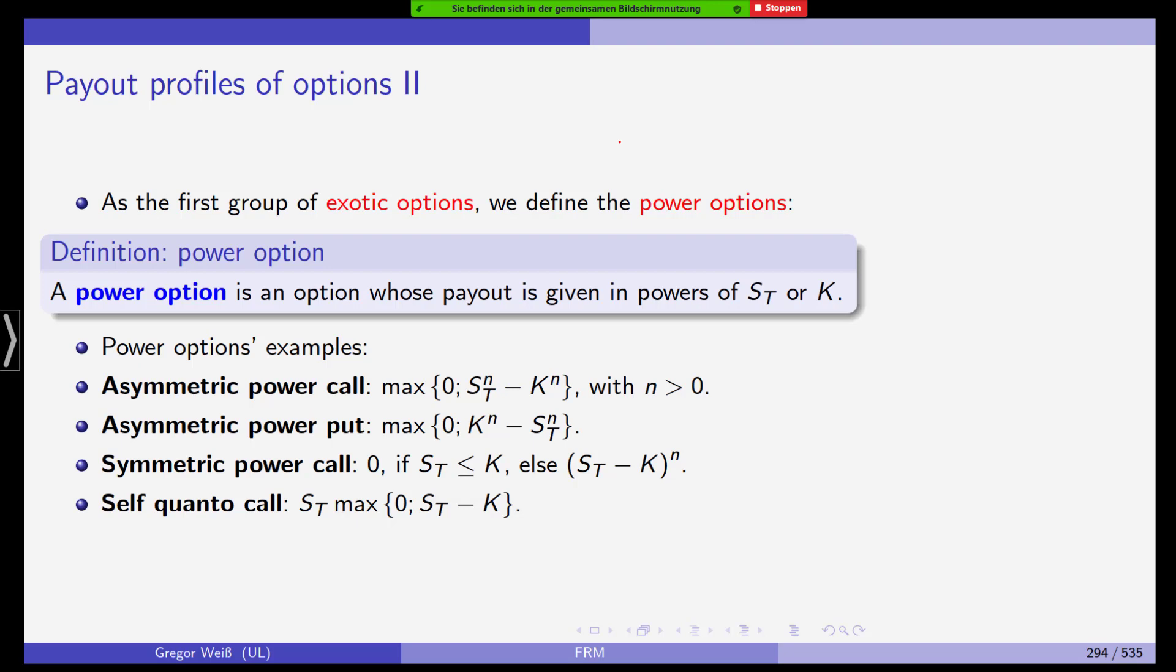Now, the call and the put, they are two examples of what we call plain vanilla options. Now, in contrast to plain vanilla options, we also have so-called exotic options, exotische Optionen. And as a first group of exotic options, we define the so-called power options. A power option is an option whose payout is given in powers of the strike or the underlying price. For example, the asymmetric power call is the maximum of 0 or the underlying price taken to the power of N minus the strike taken to the power of N. The asymmetric power put is quite similar.